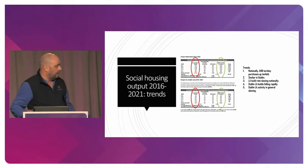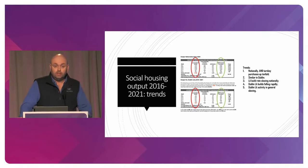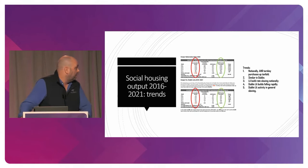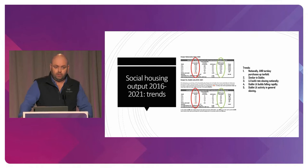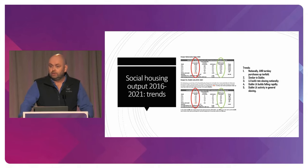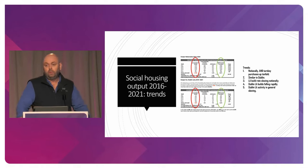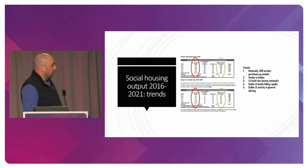The trends are that AHB turnkeys — that's the purchase of new properties — is up tenfold in the last five or six years. And local authority build rates are falling off a cliff, particularly in Dublin, which is not what you want. A report said that in areas where rents are high — Dublin, Galway, Cork, the major urban areas — you should be building, and where rents are low, you should be renting. But we're actually doing the opposite: we're renting in large urban areas and building houses in some smaller places. Housing policy goes in forward and reverse gear at the same time, always.